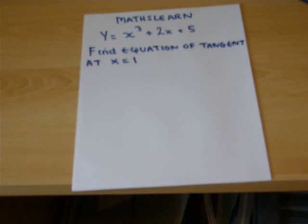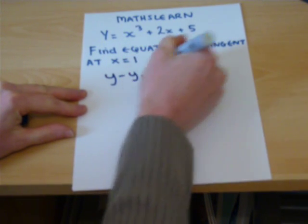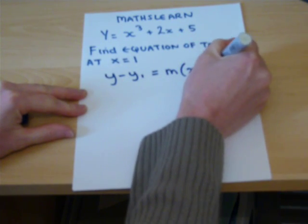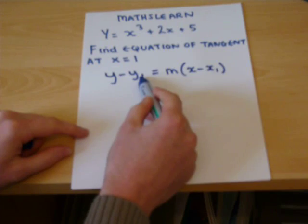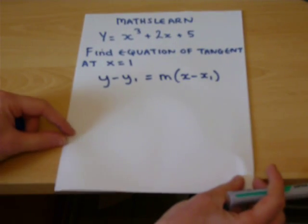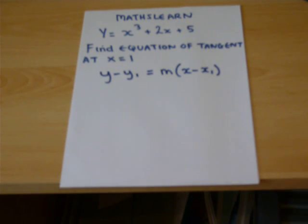This video will talk through how to find the equation of a tangent to a curve at a particular point. A tangent is a straight line, so generally it will be in the form y minus y1 equals m bracket x minus x1. This is the general equation of a line, so we need to find a coordinate x1 and y1 which the tangent passes through, but also we need to find the gradient of that particular line.